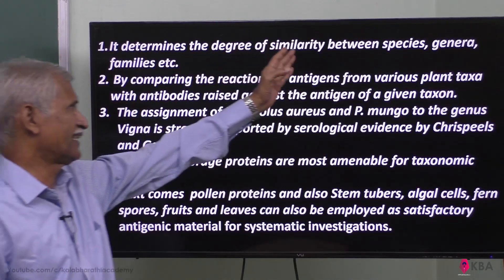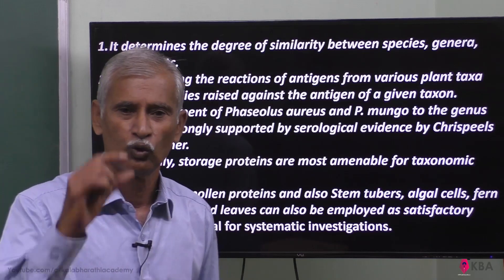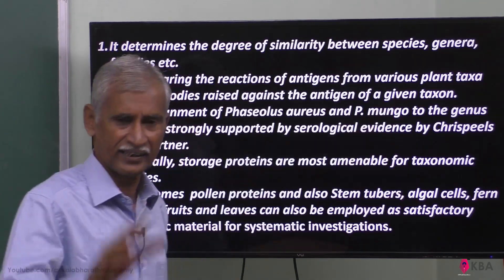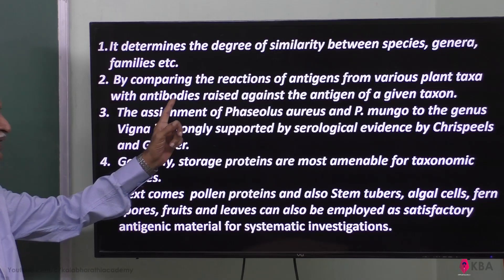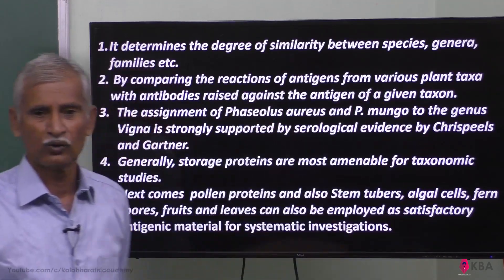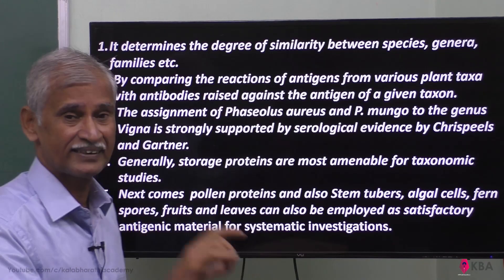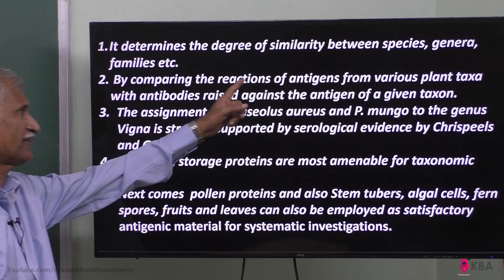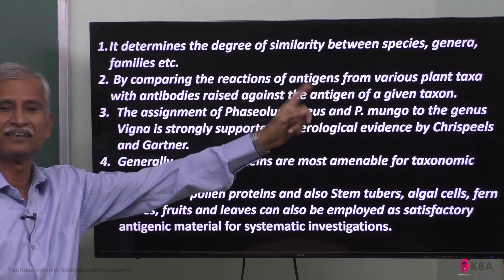Serotaxonomy determines the degree of similarity between species, genera, and families. If you study one particular plant species — say one family — an antigen is taken from that given taxon. Then, by comparing the reactions of antigens from various plant taxa with the antibodies raised against the antigen of the given taxa, classification is achieved.